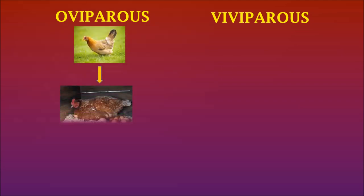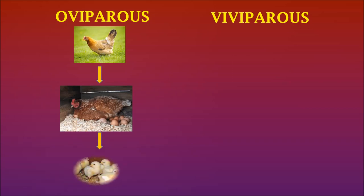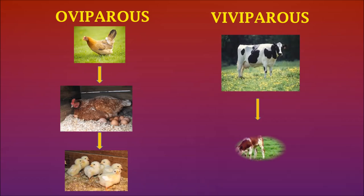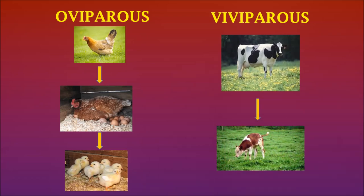On the basis of sexual reproduction, how organisms produce their young ones, they are divided into two types: oviparous and viviparous. The organisms which lay eggs and then give out the young ones are known as oviparous. Examples of oviparous organisms include lower-order organisms and birds, which lay eggs and young ones hatch out of the eggs.